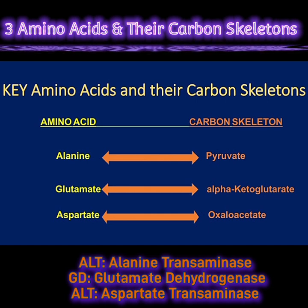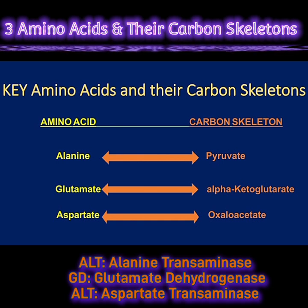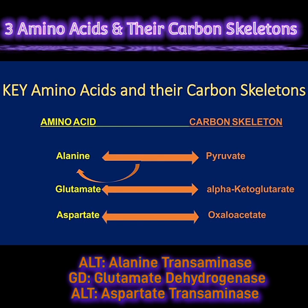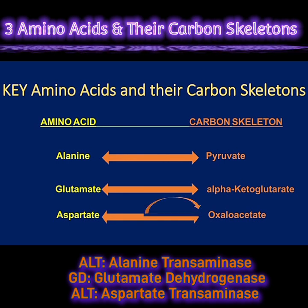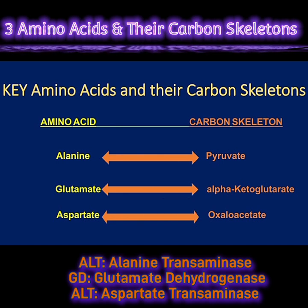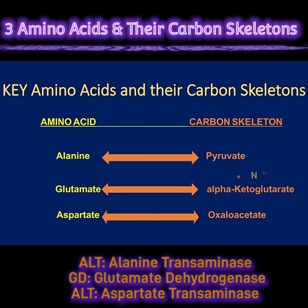Through the ALT reaction, glutamate can be used to make alanine from pyruvate. Through the AST reaction, glutamate can be used to make aspartate from oxaloacetate. And through the glutamate dehydrogenase reaction, glutamate can be broken down into alpha-ketoglutarate and ammonia.